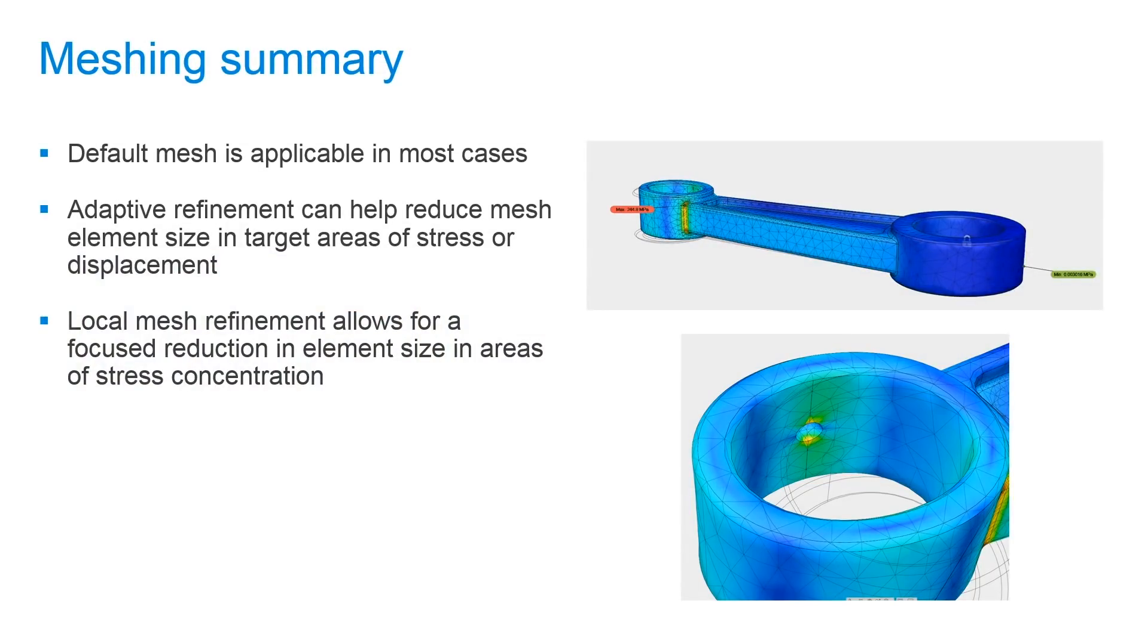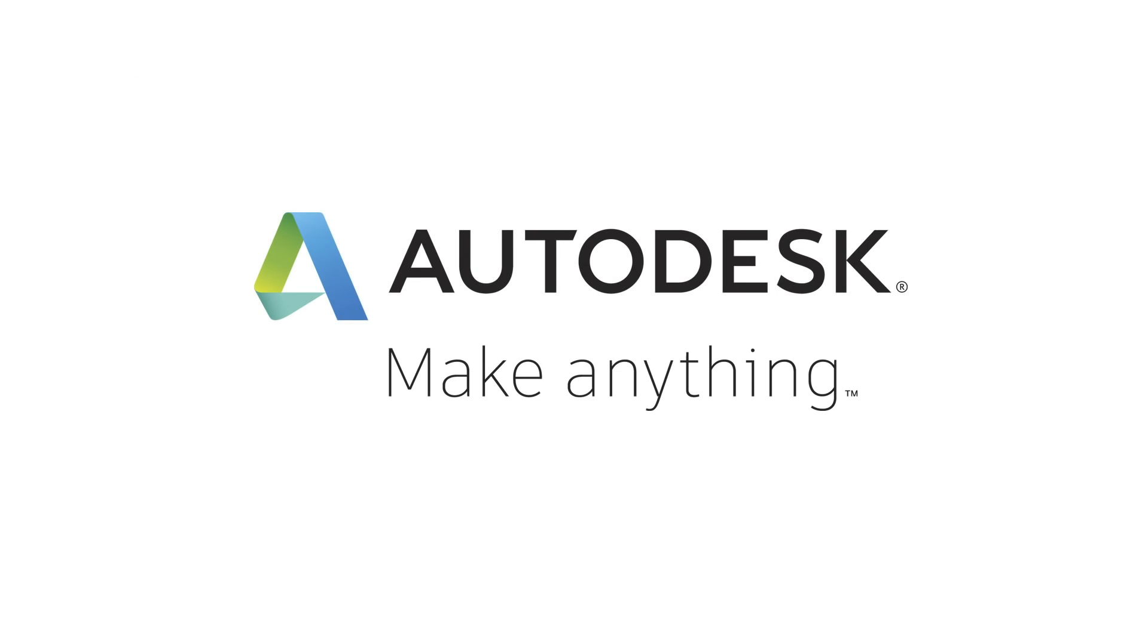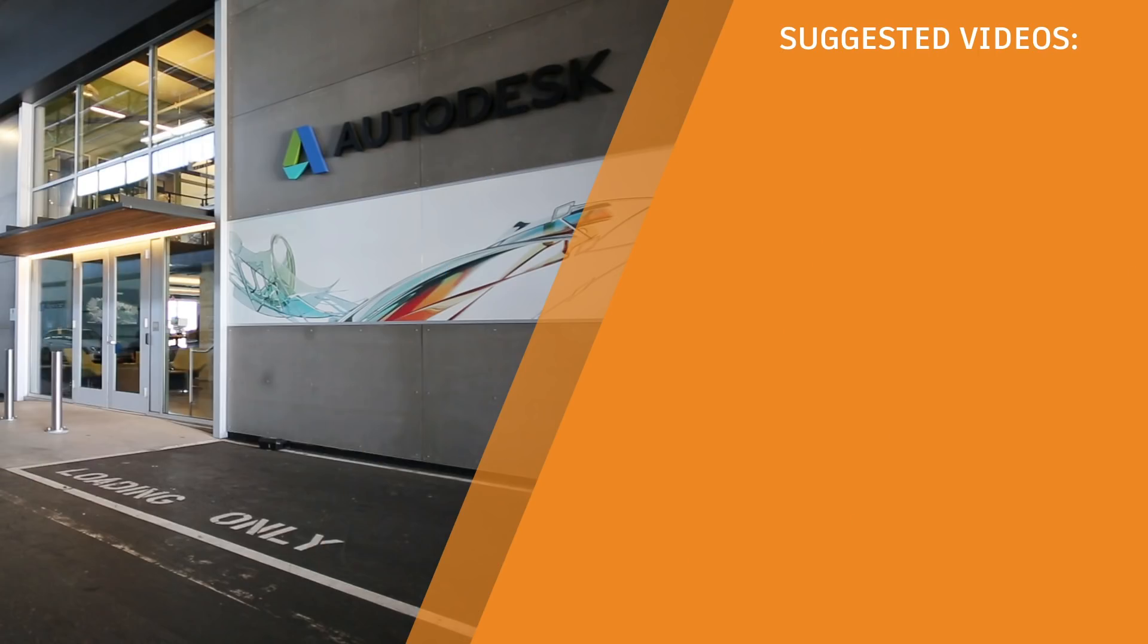Let's summarize what we've learned about meshing. The default mesh settings are applicable in most cases. It's a good idea to run a simulation based on these default settings and find out where stress concentrations are. Adaptive refinement can help reduce mesh element size in target areas of stress or displacement, and ultimately a local mesh refinement allows for a focused reduction in element size in areas of stress concentration. All of these options used together can give you a good idea of where stress concentration lies and get you a higher resolution image of where the stress may be in your parts.